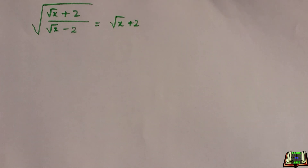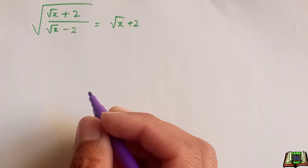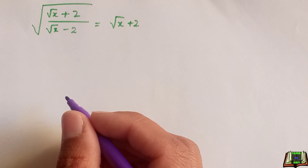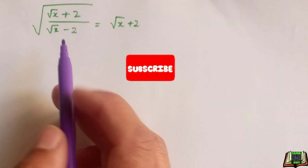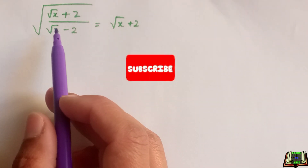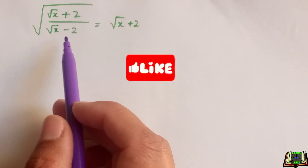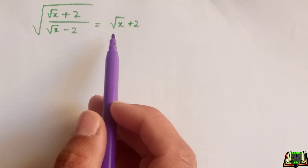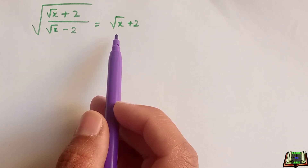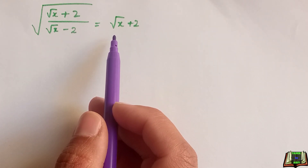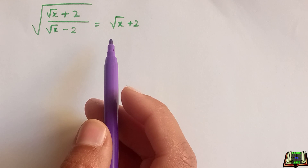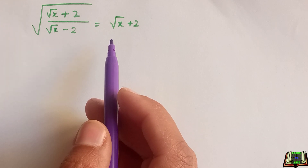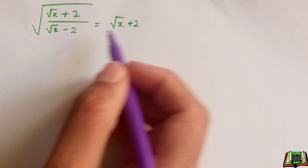Hello and welcome back. Today we have this radical problem in which we have to find the value of x, where the square root of (x plus 2) divided by the square root of (x minus 2), all under one square root, is equal to the square root of (x plus 2). Let's get started and see the solution.